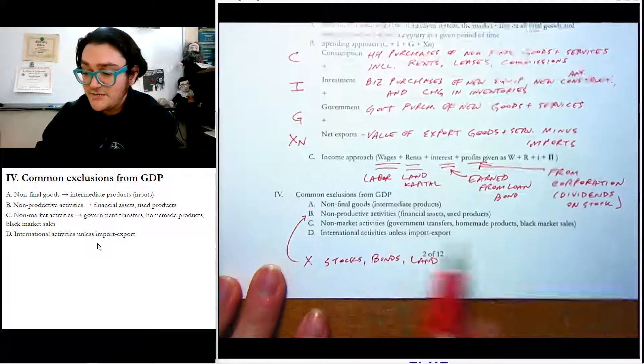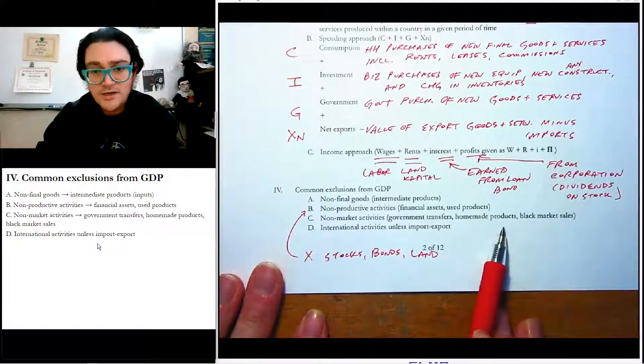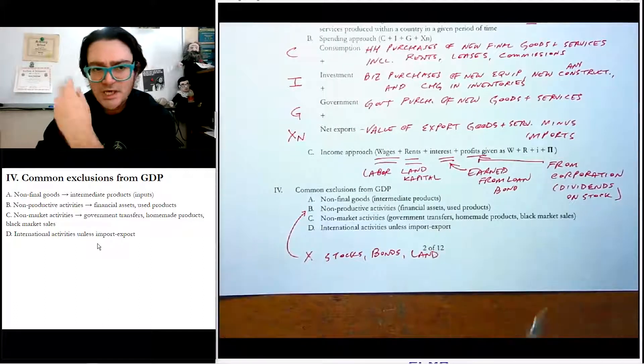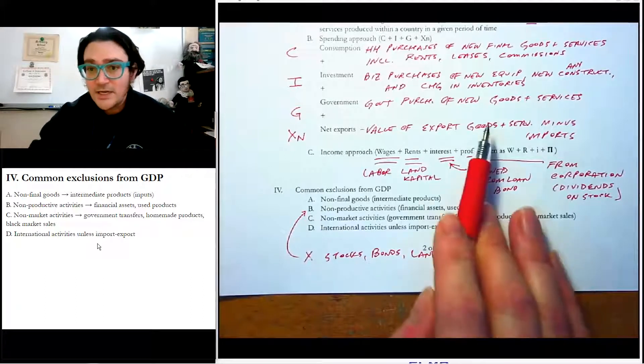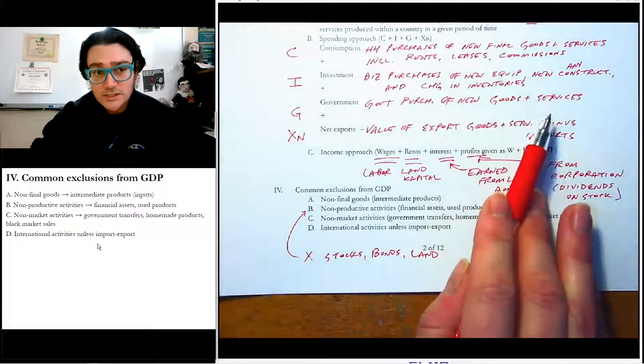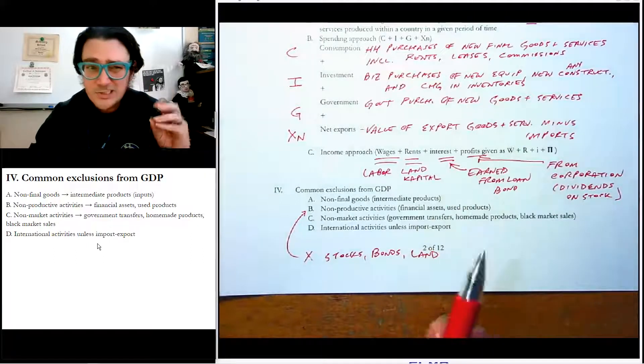Third, non-market activities. And there's a ton of these out here: black market, homemade products, government transfers. So if they just give you money, like when the government just gives a social security check, that's not the government buying a new good or a service. So be very careful. There are lots of little ins and outs to this.